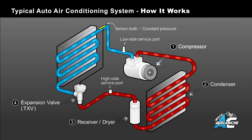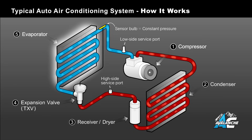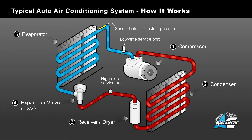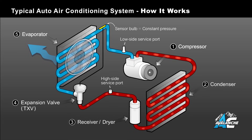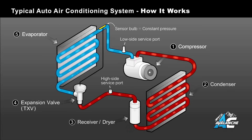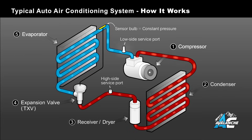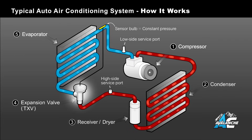This low-pressure liquid flows from the expansion valve directly into the evaporator, at which point it begins to boil and turn back into a low-pressure gas, absorbing heat as it does so. This chills the walls of the evaporator, and the blower motor pushes this cool air through the vehicle's dashboard vents. As you can see, the liquid arrows turn back into a gas, as indicated by bubbles. The low-side service port is located here, between the expansion valve and the compressor.